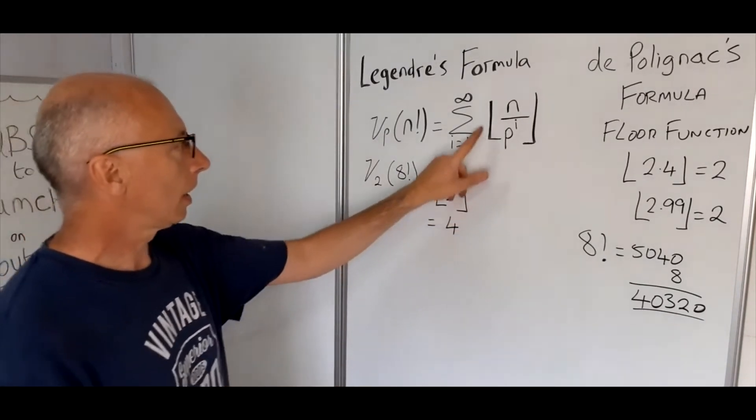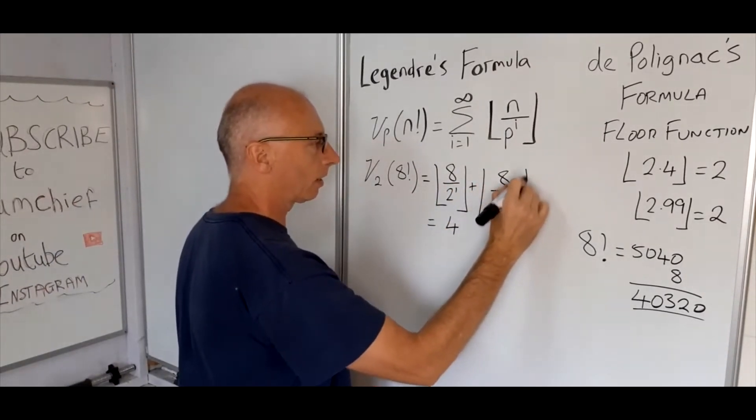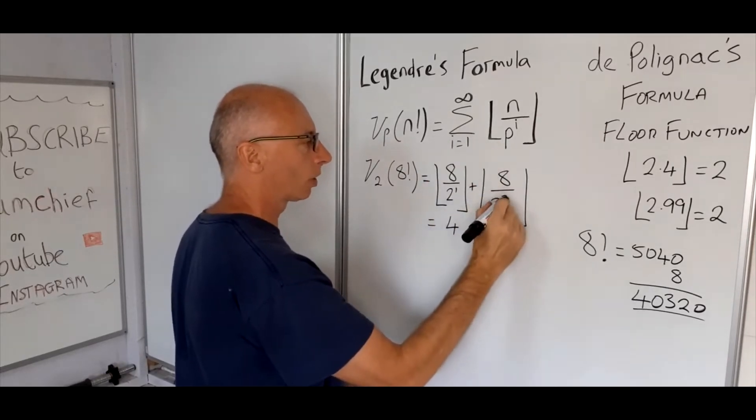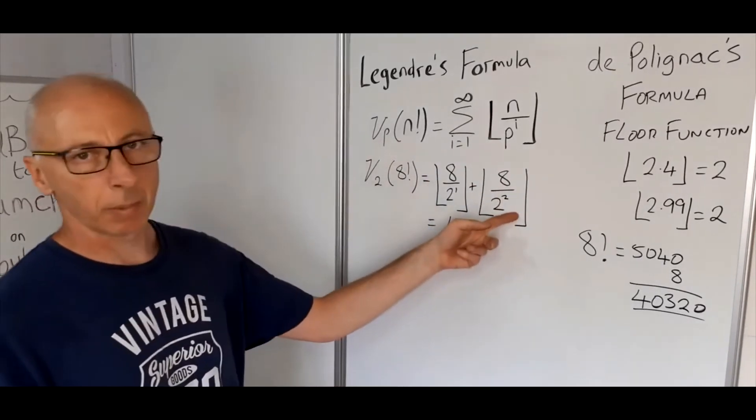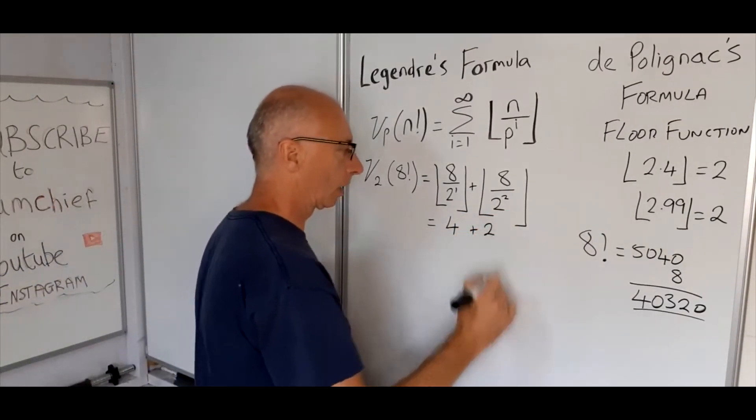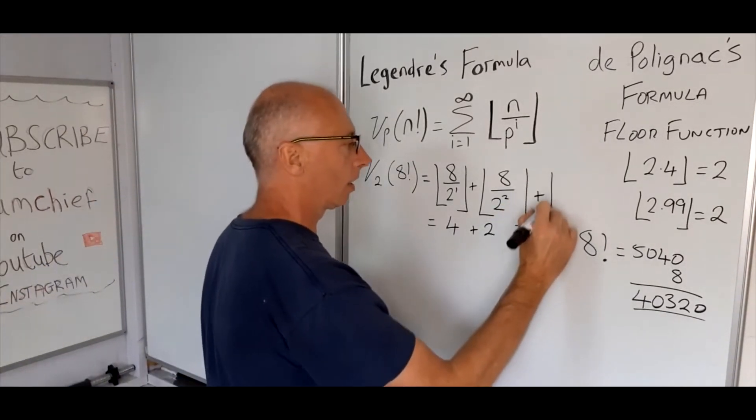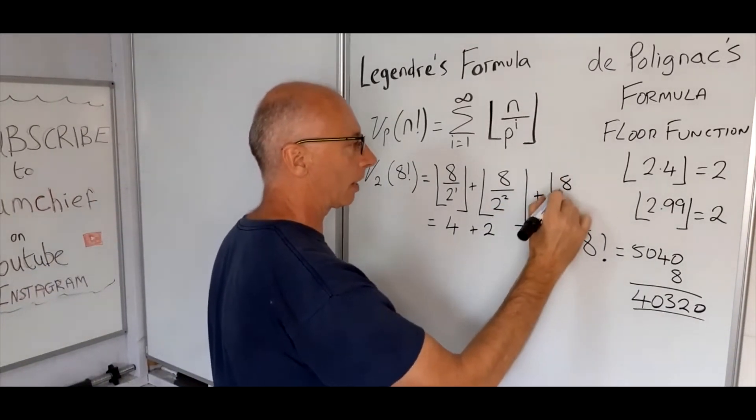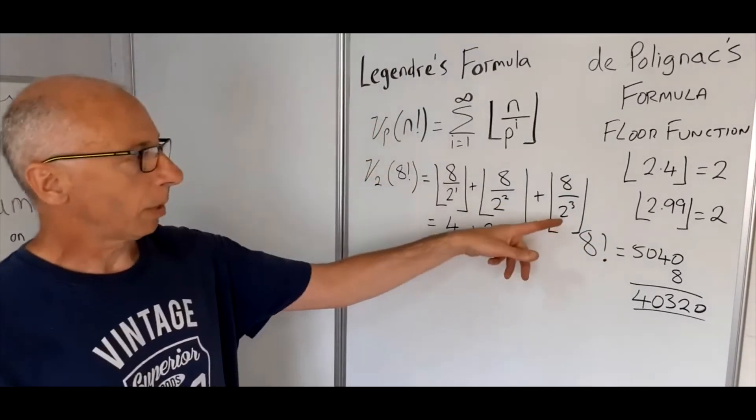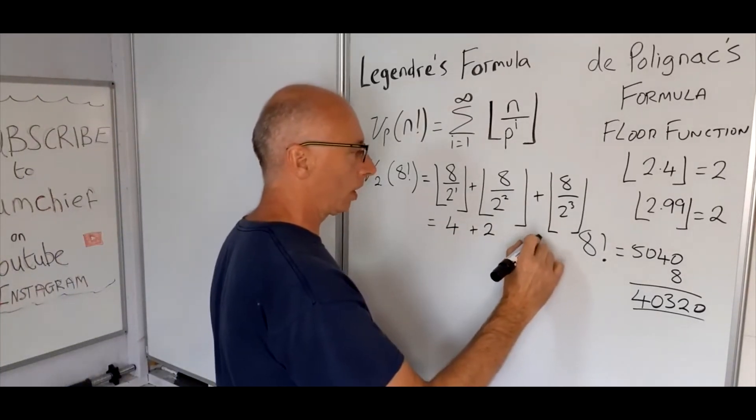Okay, now it's a summation so we need to keep going. So we've got the floor function 8 divided by 2. Now we need the number 2. That's going to be 8 divided by 4, so the floor of that is going to be 2. And then we keep going.